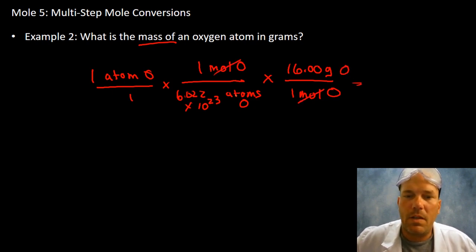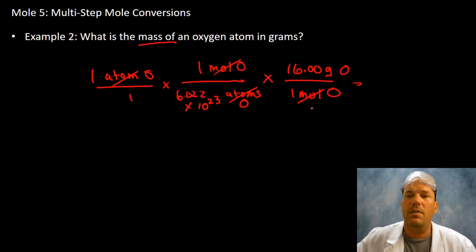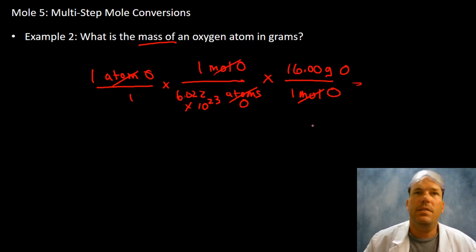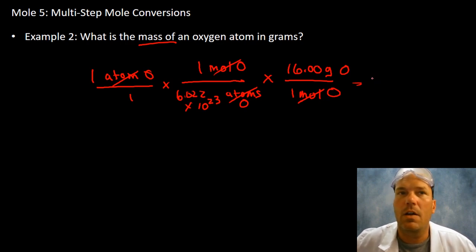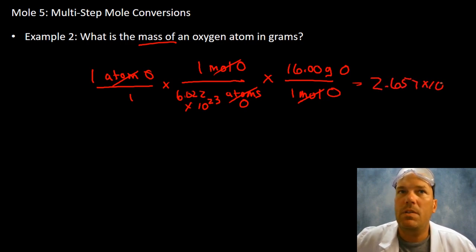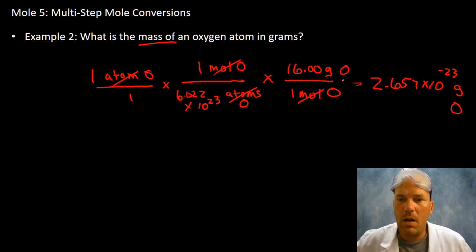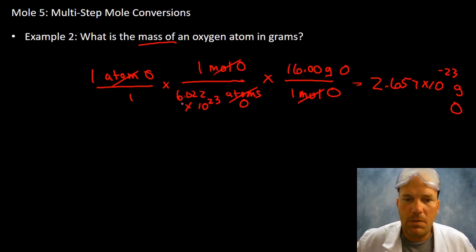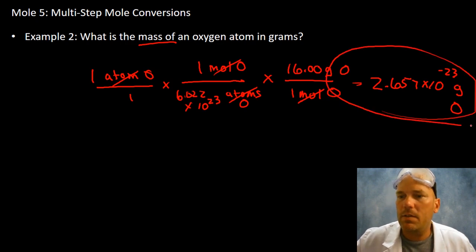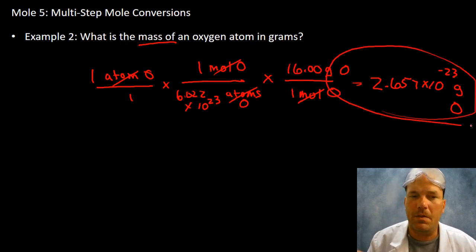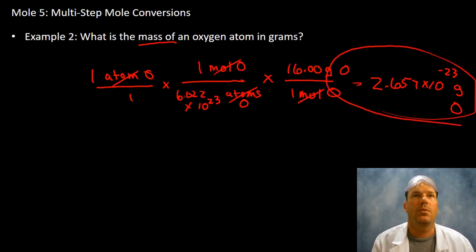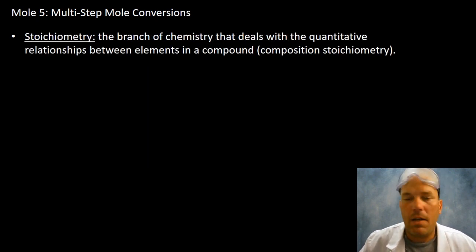Cancel everything out to make sure it all factors correctly, and this gives you an answer of 2.657 × 10⁻²³ grams of oxygen. With four sig figs in and four sig figs out, that is the final answer for example number two.